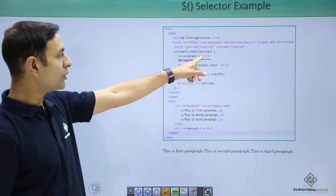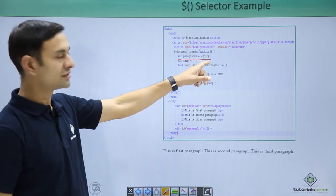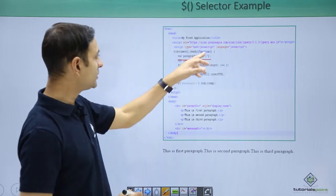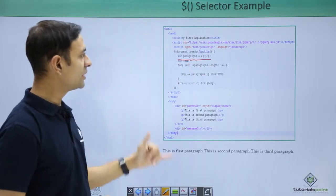var paragraph dollar p. So we are selecting all paragraphs via this selector. So var paragraph is now an array of all the paragraphs which are present in this particular document.